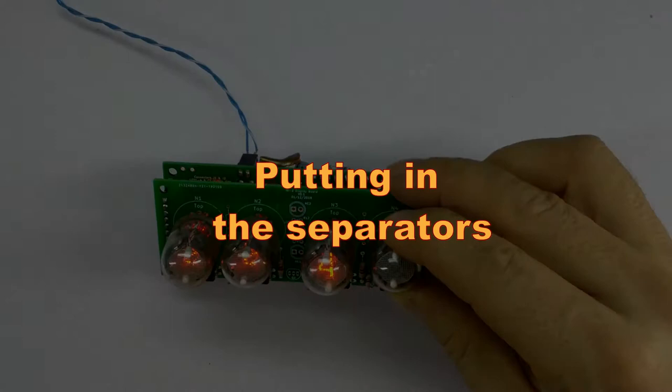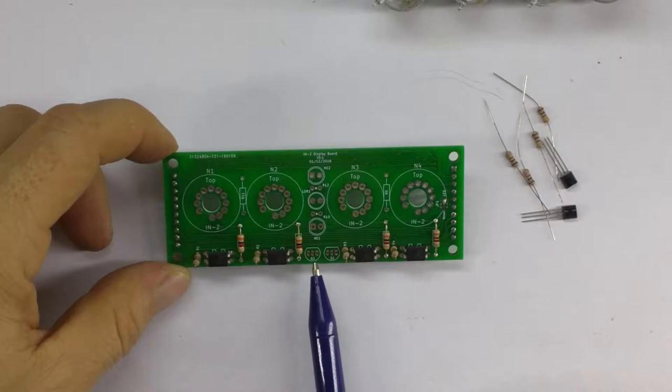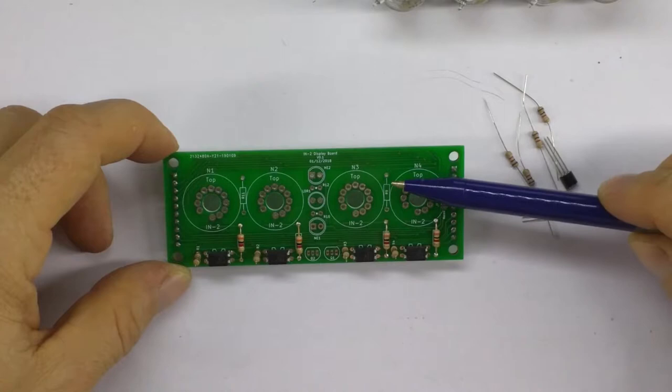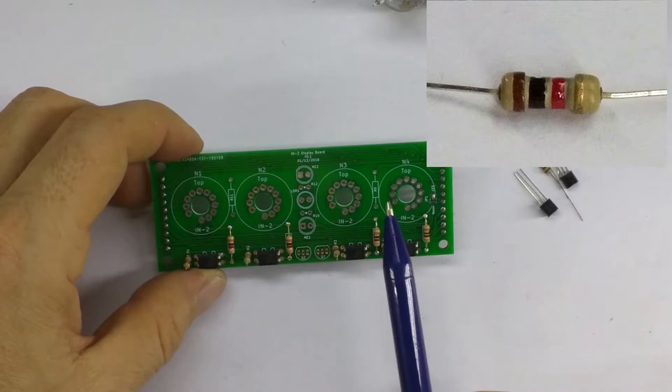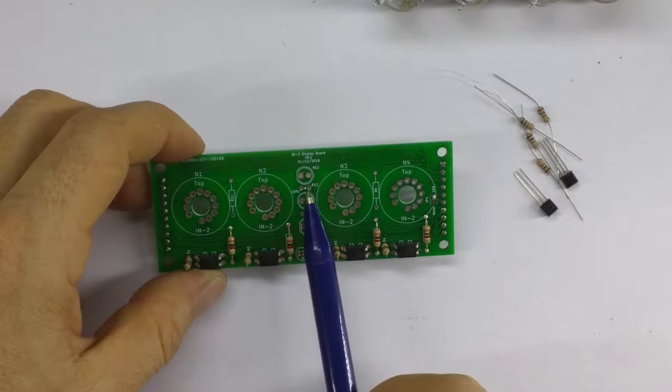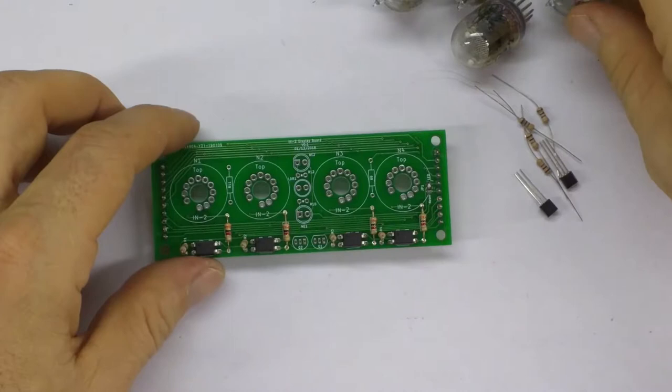So, to complete the build of this display board, what we're going to do is we're going to put in two MPSA 42s here, Q1 and Q2. And four resistors, 1K resistors. So, again, 1K. Let's take a quick look at them. That is brown, black, red. And we're going to put the four resistors in, R9, R10, R11 and R12. We're not going to put the LDR or the LEDs in yet. Because to know how to mount those, we have to wait until we get the tubes in. So, let's put these guys in.